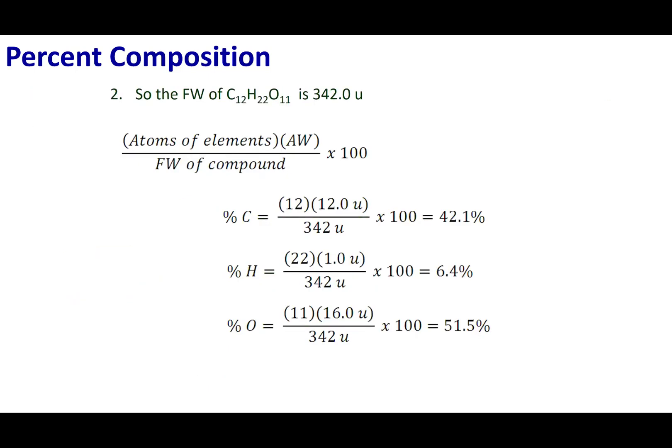So once I get the total weight, what I can do is say how much of that weight is due to carbon, hydrogen, or oxygen. Now the way to do that is I'm going to take the number of atoms of that particular element, the atomic weight of that element divided by the total formula weight. So again 342 is going to go on the bottom. I had 12 carbons and each one of those carbons weighs 12 atomic mass units. I'm going to times it by 100% and what I see is that 42% of it is made out of carbon.